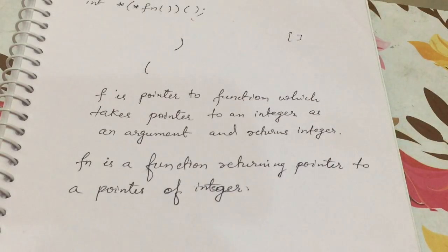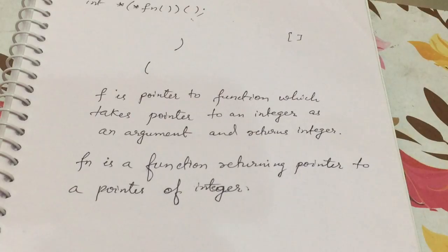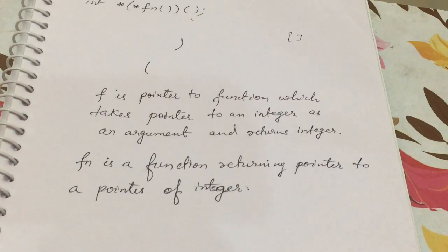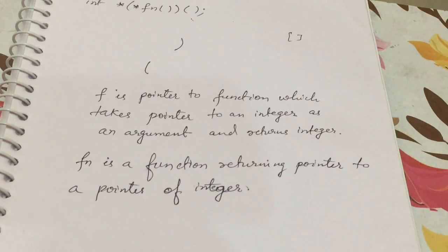Let me also mention one more thing: whenever you are given a declaration with many parentheses, you have to look at the innermost parenthesis first. Then move to the right side of that parenthesis, and after that move to the left-hand side. The first step is always to find where the identifier is. Then move to the right-hand side until you find a right parenthesis, and continue following these steps until you run out of symbols.